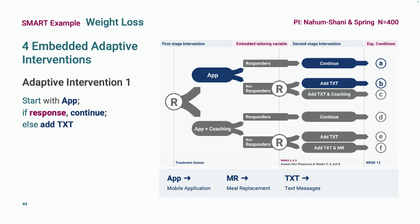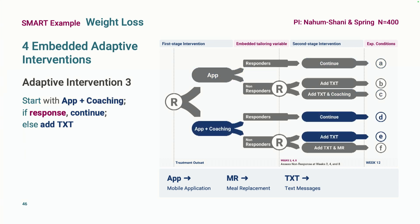The first begins with the app; responders continue with the app, non-responders add text messaging. The second begins with the app; responders continue, non-responders get text messaging plus coaching — a traditional component. Then there are two similar interventions starting with coaching: one where non-responders add text messaging, and one where non-responders add text messaging plus meal replacement — the platinum package.